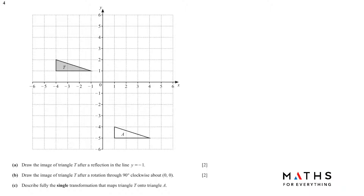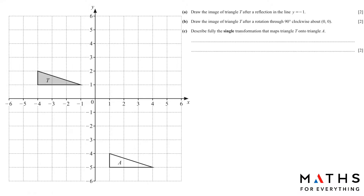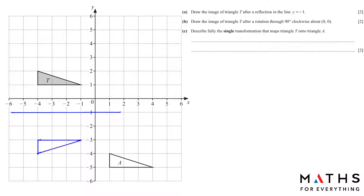Question number four is a transformation question. In part A we have to draw the image of triangle T after reflection in the line y is equal to negative one. It's a two-mark question — very easy. Negative one is here; let's draw a mirror line and reflect this. Count the number of squares from each point. This point is one, two, three — so we go down three.